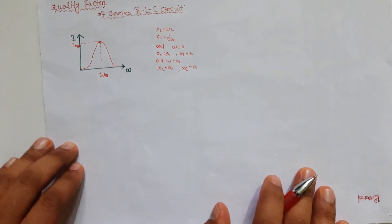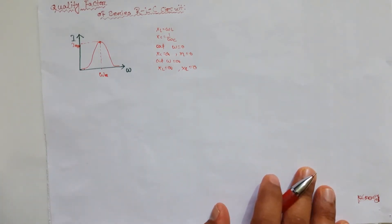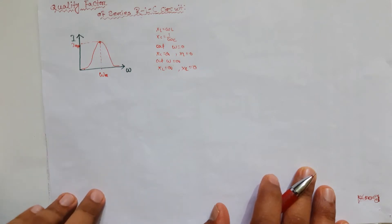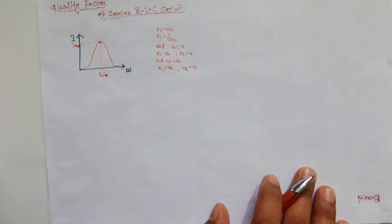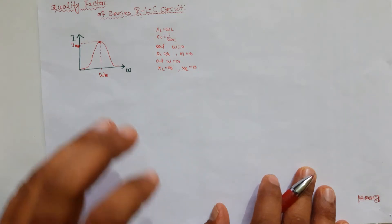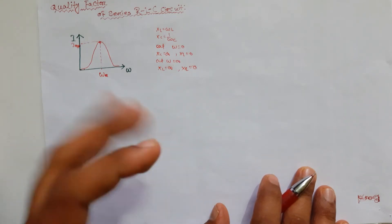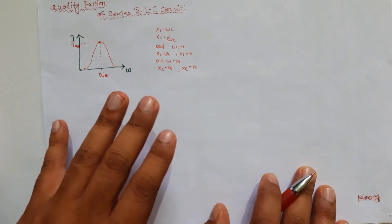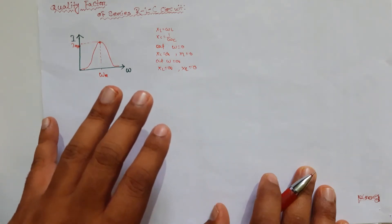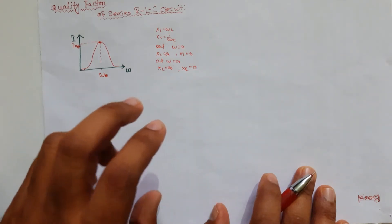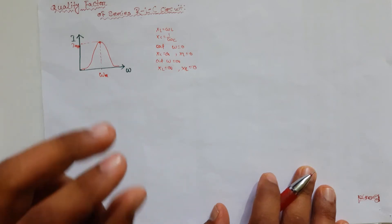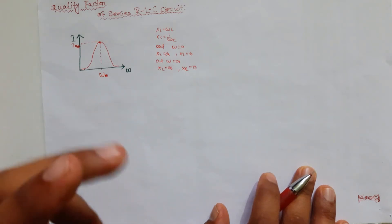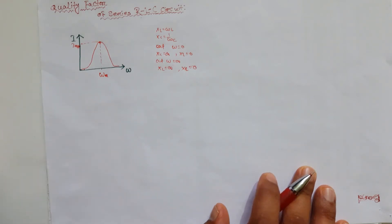First, what is the need of quality factor? In an RLC circuit it provides some type of selectivity at a given particular frequency. This type of resonance is used in radio frequency — to select a particular channel you tune the radio.